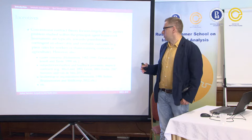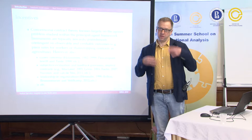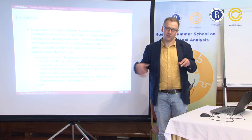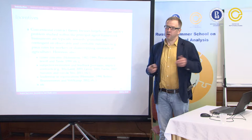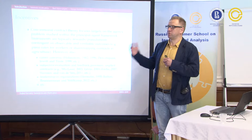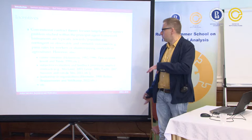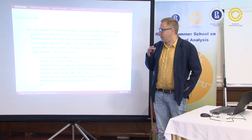The principal tries to create incentives for the agent that would align the agent's interests with those of the principal. This principal-agent framework is the main building block of contract theory. There are also other models, such as Holmstrom's career concerns framework, where the principal cannot create formal incentives but the agent understands that performance is observed by the market, and therefore wants to do well to get a good wage in the future.